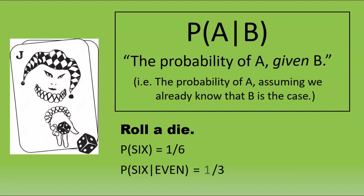Of the three even numbers, only 1 is a 6, so the probability of a 6, given that the result is even, is 1 third.